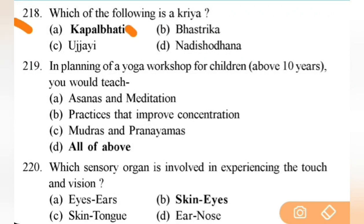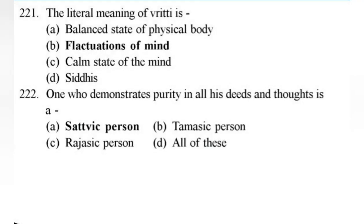Which of the following is a Kriya? Right answer is A — Kapalabhati. Next: in planning a yoga workshop for children about 10 years old, you would teach all of the above — asanas, meditation to improve concentration, mudras, and pranayama. Next: with which sensory organs is experiencing touch and vision involved? Right answer is B — skin and eyes.